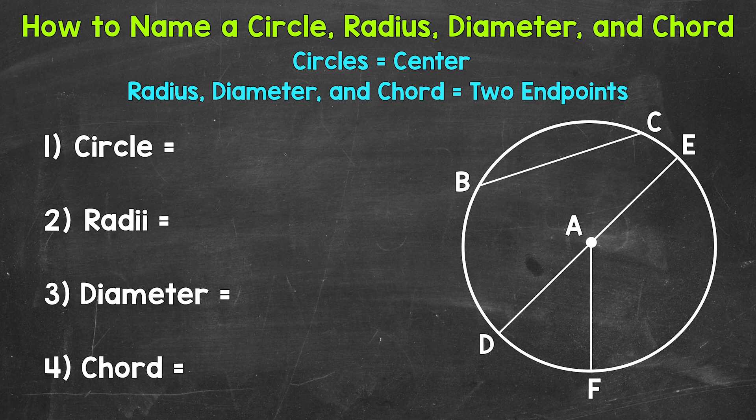Let's jump into our example, starting with naming the circle. Now we name a circle by its center. So this circle would be named Circle A, because this is our center right here, labeled A. We name our circle by the center, so this would be Circle A.